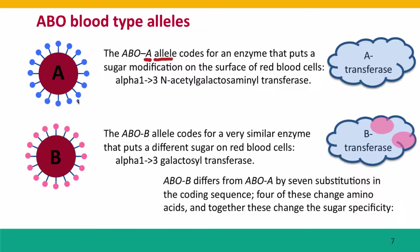That modification is drawn as blue dots. The actual name of the enzyme is alpha-1,3-N-acetylgalactosaminyl transferase — it transfers alpha-1,3-N-acetylgalactosamine onto the surface of the red blood cells. That's what the A allele codes for.